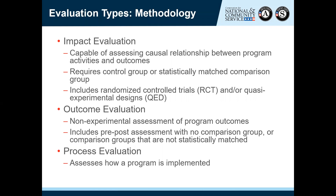An outcome evaluation is similar in some ways to an impact evaluation in that they both measure outcomes of program activities. However, an outcome evaluation does not have that experimental design — the RCT or quasi-experimental QED design — so outcome evaluations can't assess whether program activities actually caused the outcomes. A non-experimental outcome evaluation may have a comparison group, but it wouldn't be randomly assigned or statistically matched, and some don't have comparison groups at all. A process evaluation is designed to look at how a program is working in practice — whether it's reaching intended beneficiaries or following a program model with fidelity.